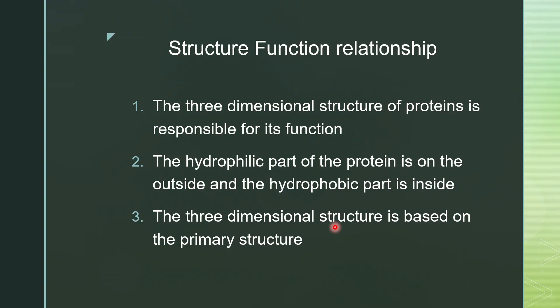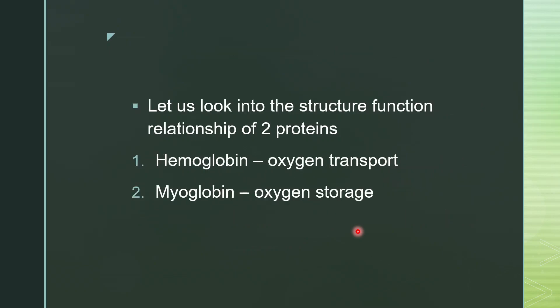The non-polar part, which is not reacting, is on the inside. Thirdly, the three-dimensional structure is based on the primary structure. As we have seen in the last lecture, the primary structure is the linear sequence of amino acids present in a polypeptide chain. If the sequence of amino acids changes, the function of the protein will change. So the tertiary structure of the protein is in turn dependent on the primary structure.